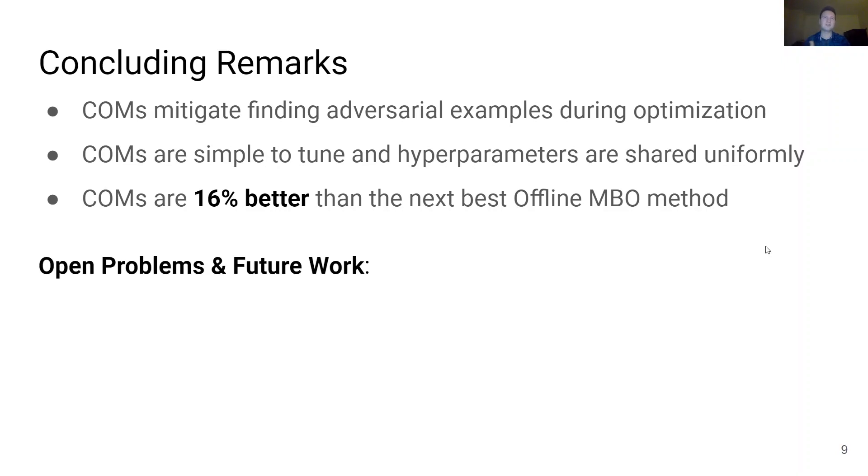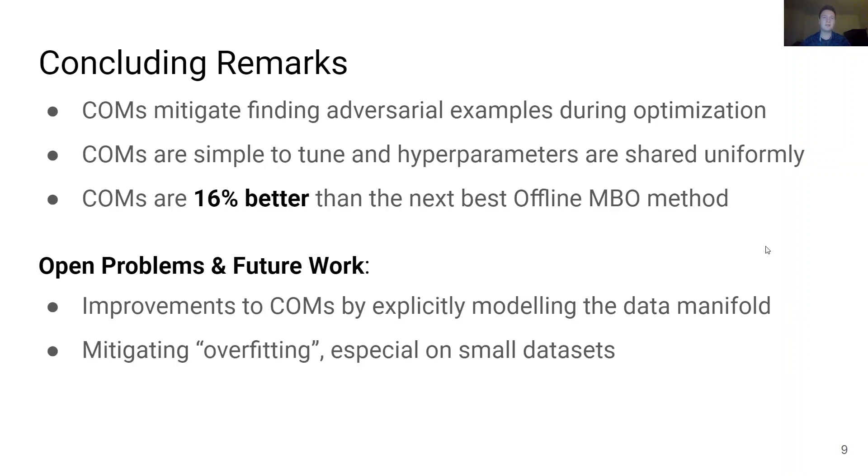The success of COMs suggests a few promising directions for future work. Firstly, one could possibly make improvements to COMs by incorporating models that explicitly model the data manifold during optimization, which COMs does not do. Secondly, what problems arise when using COMs on tasks where the offline dataset is prohibitively small? In these instances, overfitting poses a challenge and characterizing and mitigating overfitting would make offline MBO more reliable in this setting. Finally, a deeper understanding of how neural network models extrapolate could help explain why and how adversarial examples are found and could result in more powerful optimization schemes that work better in practice.